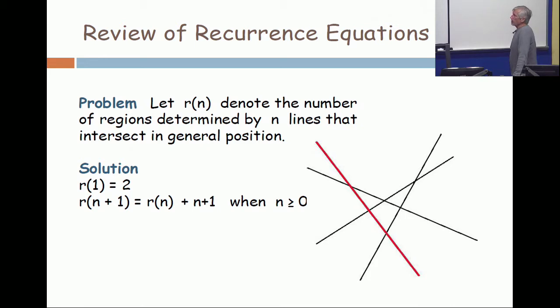Here I'm going to try to stick with a notation where we have a function of the integer n. So r(n) is the number of regions determined by n lines that intersect in general position. If you have only one line, it separates the plane into one half and the other half, so r(1) is 2. And then we develop the recurrence: r(n+1) equals r(n) plus n plus 1, when n is greater or equal to 0.